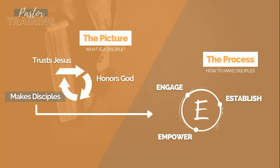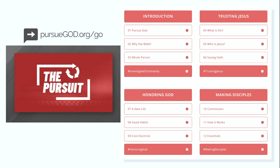So now we're ready to finish talking about the process for making disciples using the Pursue God resources. You engage someone by simply covering topics that are of interest to them — this is where you begin to build a relationship with someone else, one conversation at a time. At some point they'll be ready to talk about the Christian faith, and that's when you establish them by completing the Pursuit with them. The Pursuit is our 12-part discipleship track that goes over the most important, most fundamental conversations — that's where you'll talk about trusting Jesus, sin, and salvation.